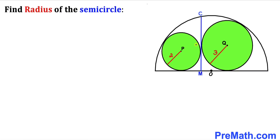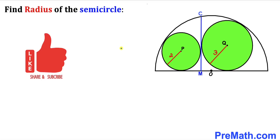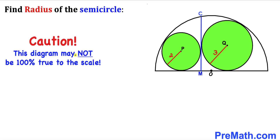Welcome to Pre-Math. In this video we have two green circles inscribed in between the semi-circle and this vertical line CM, as you can see in the diagram. The radius for the small green circle is two units, whereas the radius for the larger green circle is three units. Keep in mind that these two green circles are not tangent to each other, and we are going to calculate the radius of this semi-circle.